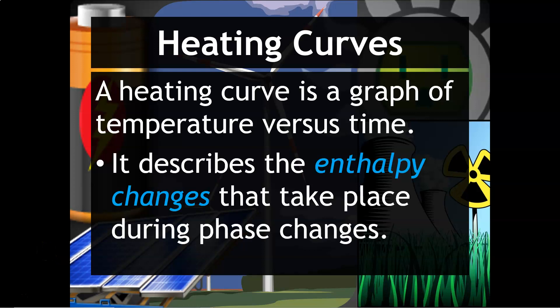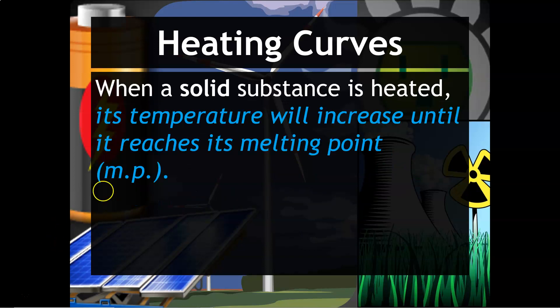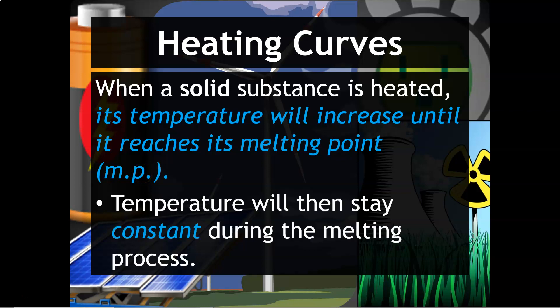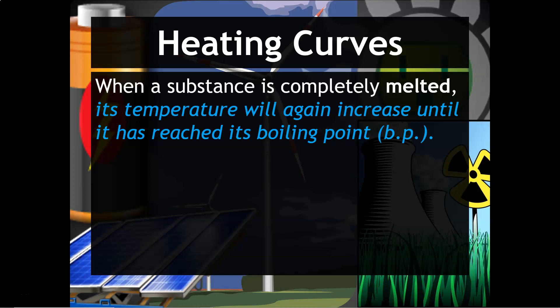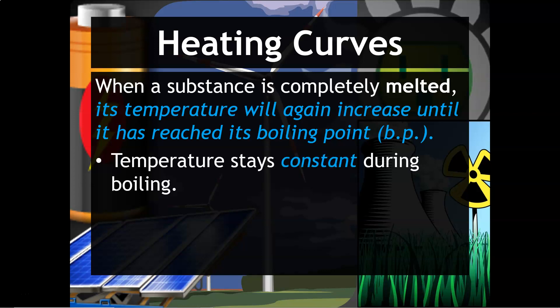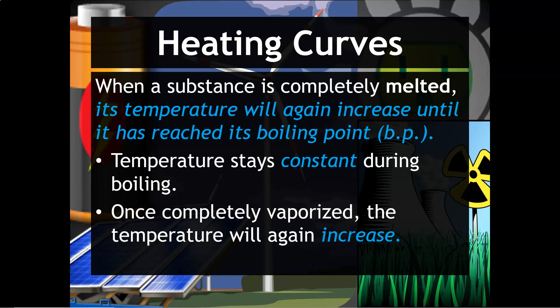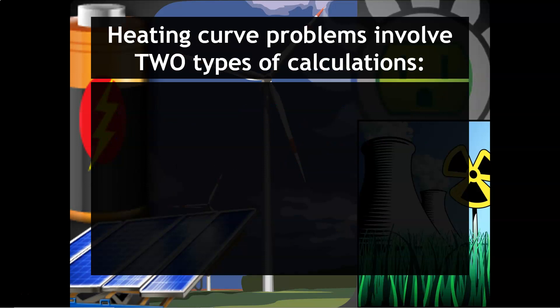A heating curve is a graph of temperature versus time. It describes the enthalpy changes that take place during phase changes. When a solid substance is heated, its temperature will increase until it reaches its melting point. Temperature will then stay constant during the melting process. When a substance is completely melted, its temperature will again increase until it reaches its boiling point, and then temperature will stay constant during boiling. Once the substance is completely vaporized, the temperature will once again increase.